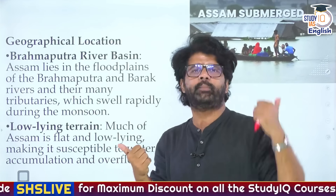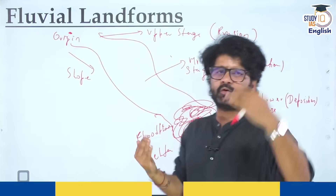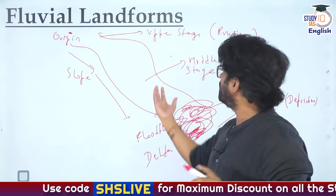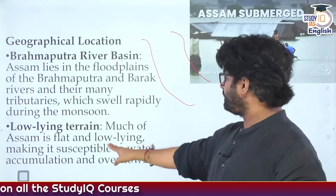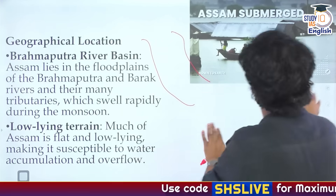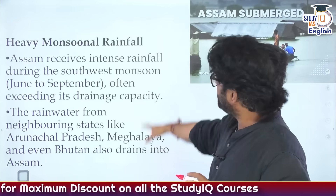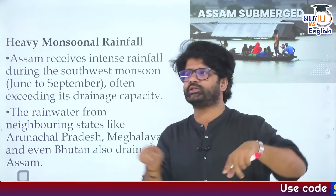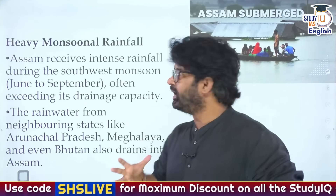Brahmaputra carries an extreme amount of water because of both glacial melt and monsoon rainfall. Plus, because of earthquakes in the region, Brahmaputra keeps changing its course. Assam is also low-lying terrain - for a river to flow it needs slope, and since Assam is in this low-lying area, water accumulates. Much of Assam is flat and low-lying, making it susceptible to water accumulation and overflow. Assam receives intense rainfall, and water from neighboring states like Arunachal, Meghalaya, and even Bhutan drains into Assam.